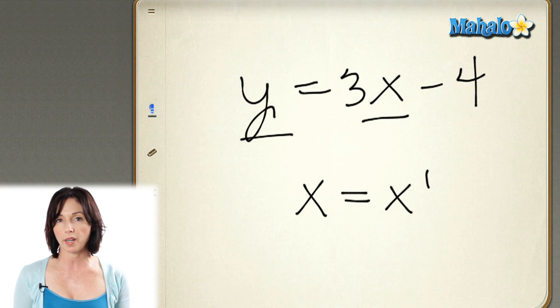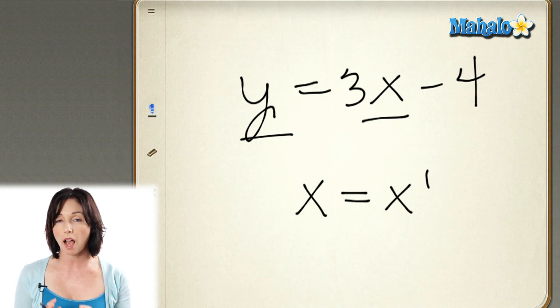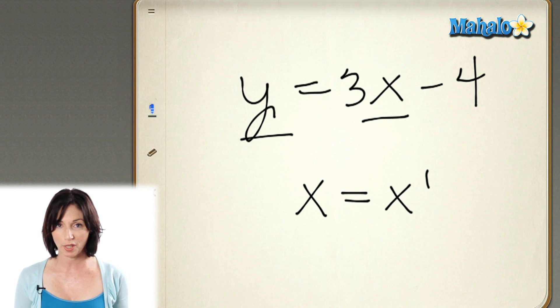If there was an x squared term, or an x cubed term, or any power of x higher than the power of 1, this wouldn't be a linear equation. So anytime you see an equation that has the independent variable in only the power of 1, you know it's a linear equation — the equation of a line.